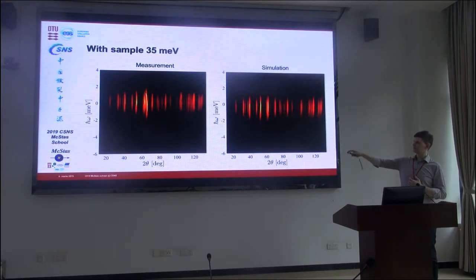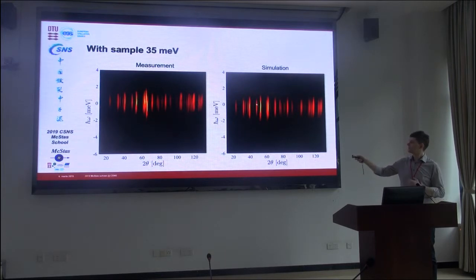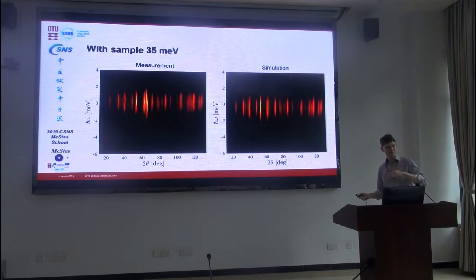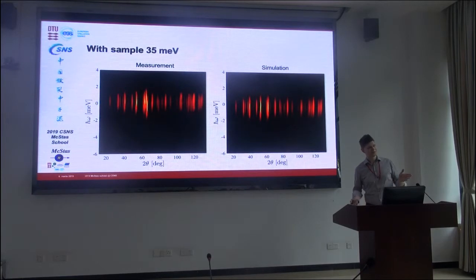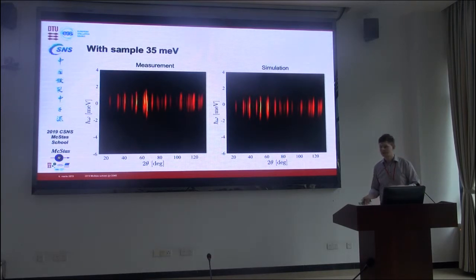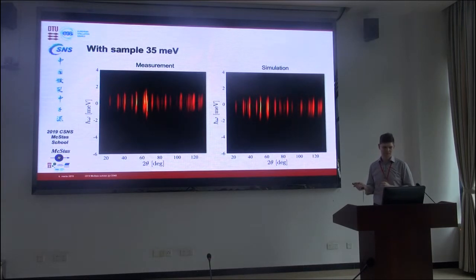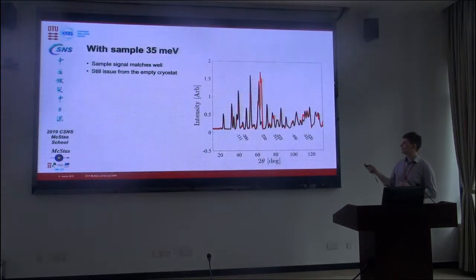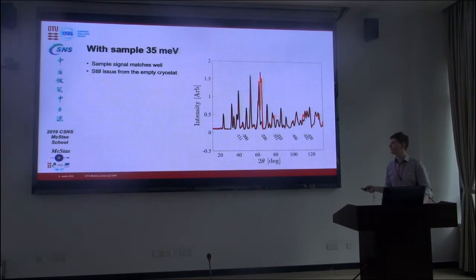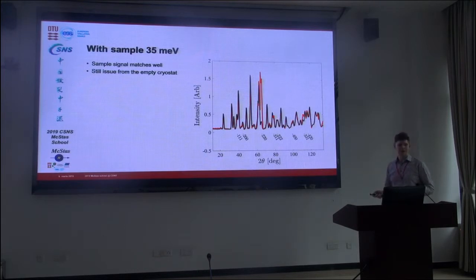When we compare simulation and measurement with a sample, the agreement is much better because the sample scatters more strongly than the background and dominates. The high-angle region corresponds to the energy resolution, which is matched very well. There is an overall shift in that the simulation places the peak center slightly lower in energy than the real experiment — likely because the experiment renormalizes to the peak center while the simulation centers on the pulse, which has a longer tail on the negative energy side.